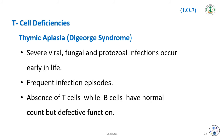T cell deficiency — DiGeorge syndrome — involves severe viral, fungal, and protozoal infections occurring early in life, with frequent infection episodes. There is absence of T cells, while B cells have a normal count but defective function. The reasons for this defective B cell function will be discussed later.